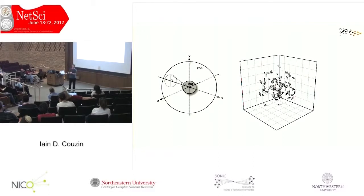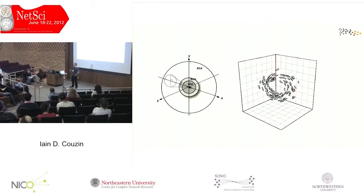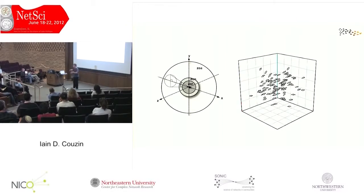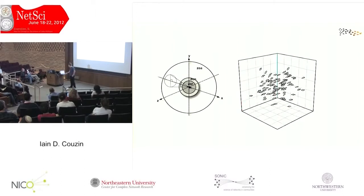The model predicts that if you don't have the tendency to align — if you just have repulsion and long-range attraction — we get a mosquito-like swarm with disorder within the group. As we introduce the tendency to align with near neighbours, we get a sudden transition into a rotating torus formation, where individuals perpetually rotate around an empty core. But there's nothing in the equations that says go in a circle — for exactly the same behaviours, we also see a fluid moving group. Remember these three fundamental states of matter of these types of groups.